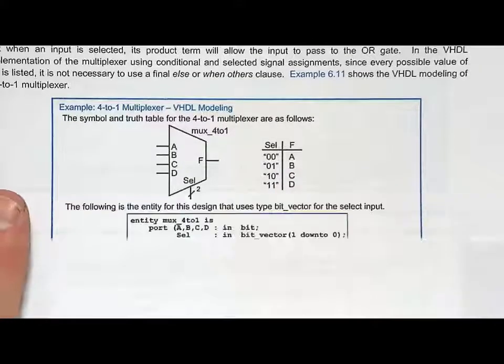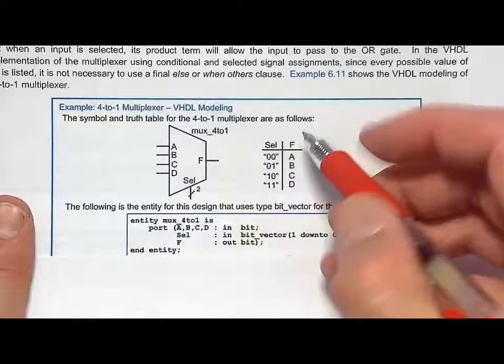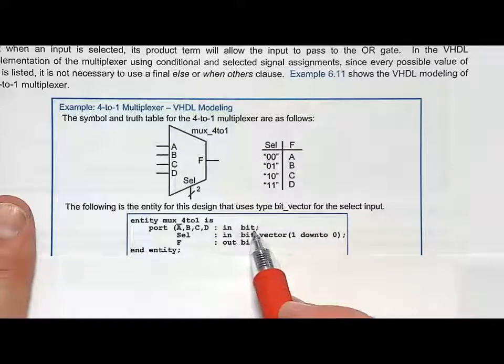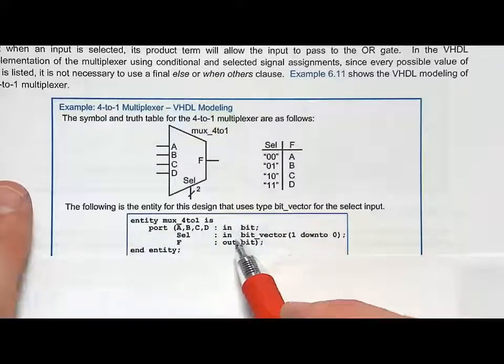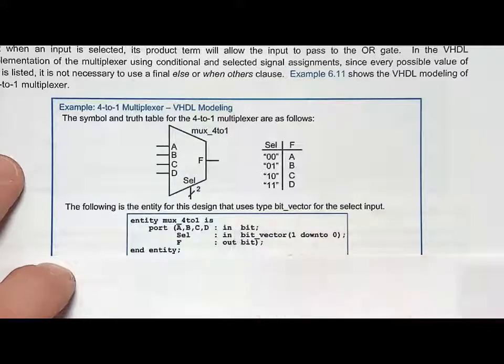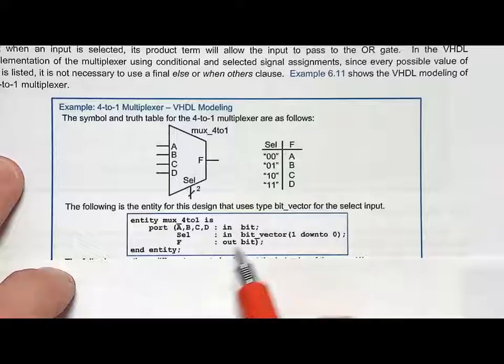Let's model select as a vector to make it easier. We'll model A, B, C, and D as bits. This will allow us to model it more directly in terms of our classical implementation that we just looked at, and F is going to be the output.